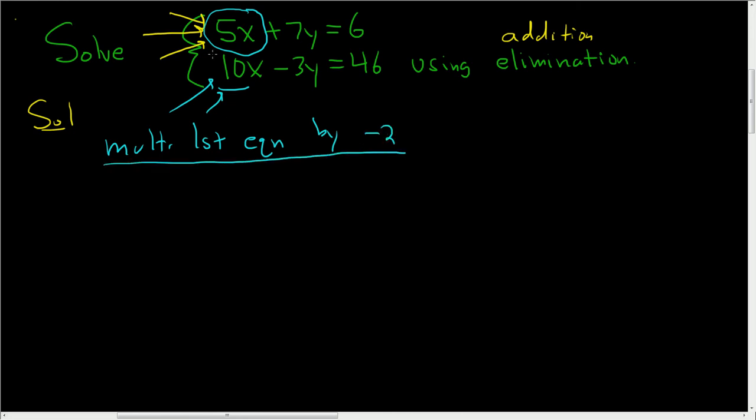So negative 2 times 5x is negative 10x. Yep, and negative 2 times 7y is minus 14y. And negative 2 times 6 is negative 12.